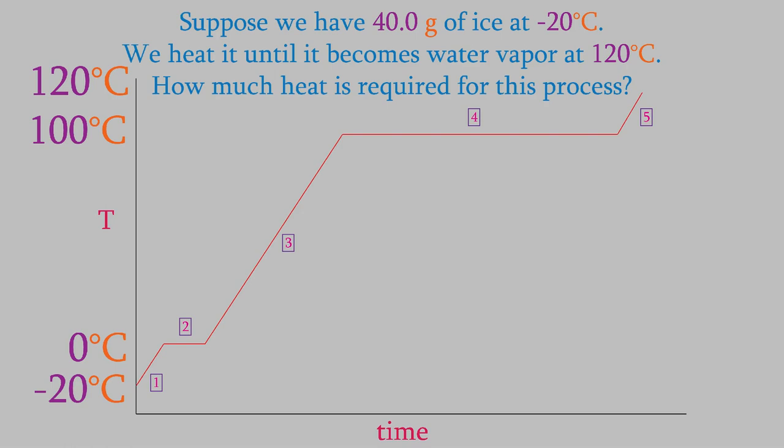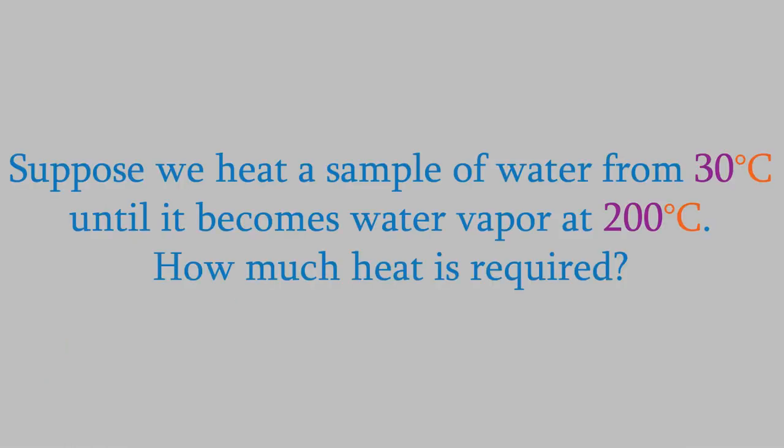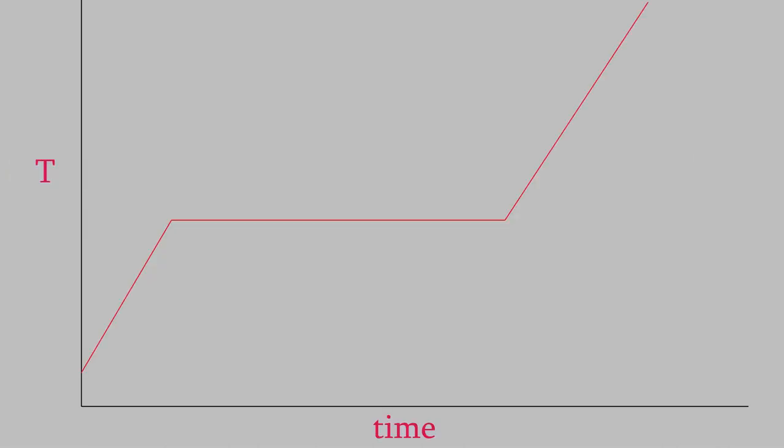Second, sometimes you don't actually need as much information as we had in the example we just did. For example, suppose you had a problem where you heat water from 30 degrees to 200 degrees. In that case, since you begin at 30 degrees, you're starting with liquid water, and that means your heating curve will look like this. You start by heating the liquid, then in the flat part the liquid vaporizes, and then the water vapor gets heated. So, your calculation in this example will only have three parts, not five parts. That shows how important it is to keep track of the phases of your starting and ending points. For that reason, I really recommend that you draw a heating curve when you solve a problem like this. It makes solving them a lot easier.